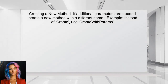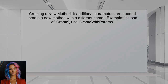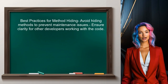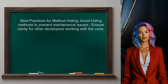If the user needs to add parameters to the method, they should create a new method with a different name. This avoids hiding the base method while allowing for additional functionality. Finally, the user should be aware that hiding methods can lead to maintenance issues and confusion for other developers. It's best practice to avoid hiding methods unless absolutely necessary.